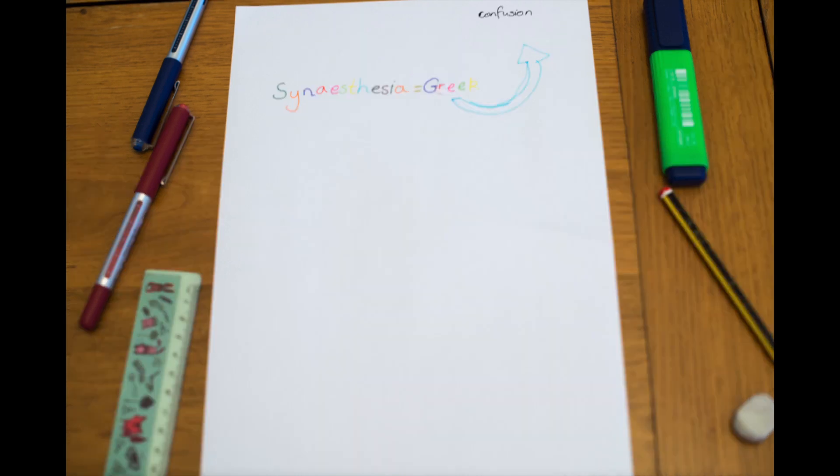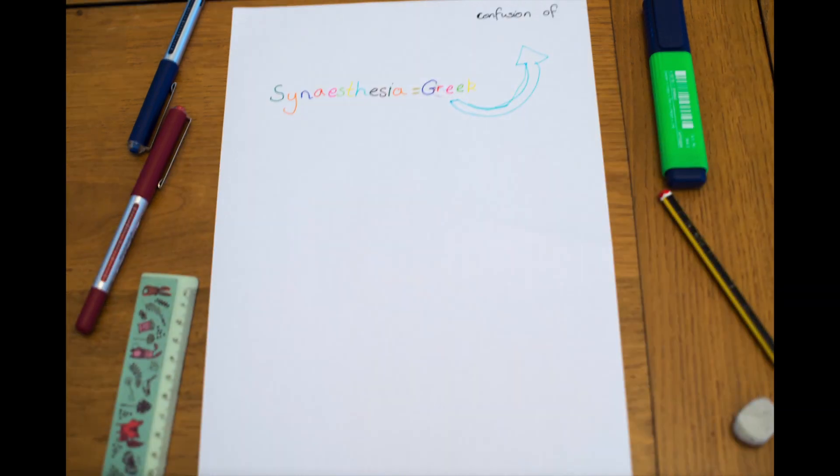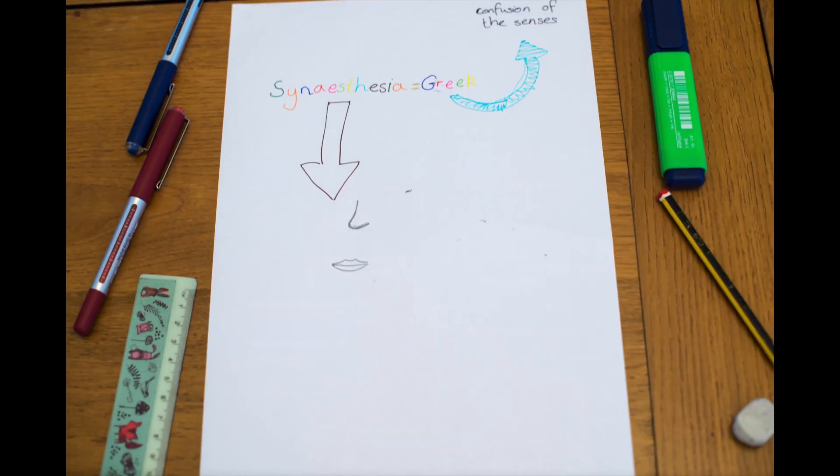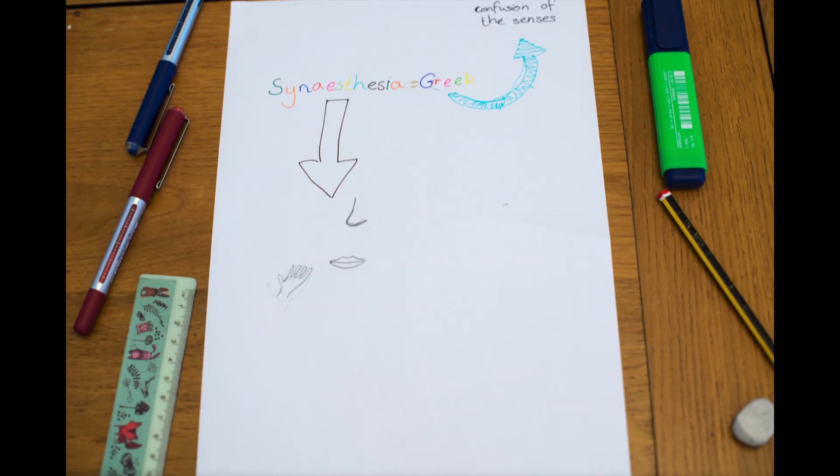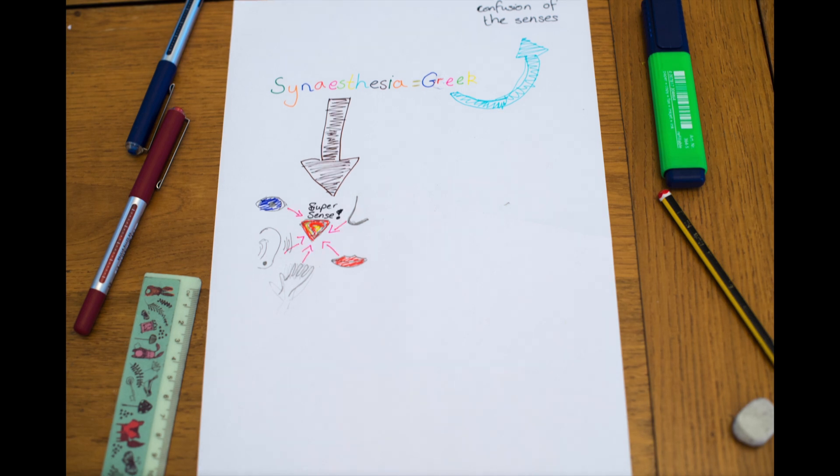Synesthesia is also known as confusion of the senses in Greek. Synesthesia is when all of the senses are blended together into one big super sense. This occurs when the senses have not properly separated as a baby.